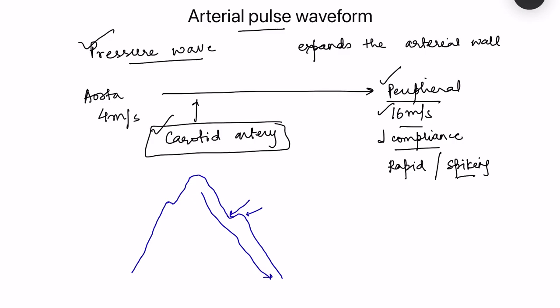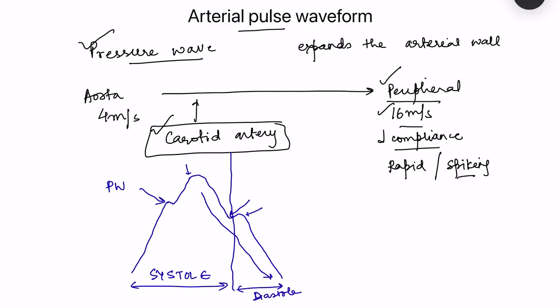The systolic phase contains two waves: the percussion wave and the tidal wave. The diastolic phase follows. Normally these two systolic waves are felt as one because they occur almost simultaneously and are not felt as two separate peaks. However, in certain conditions when they do not occur simultaneously, they will be felt as two distinct peaks.